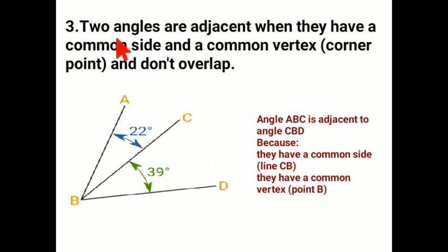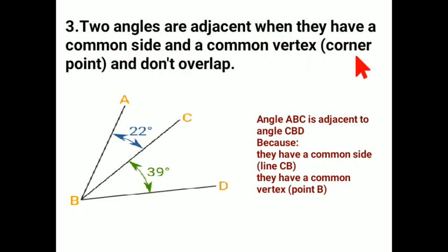Proceeding forward, we have adjacent angles — which is very, very important and we have to understand the concept clearly. In this chapter we will study about pairs of angles, not just a single angle like an acute angle, obtuse angle, or straight angle. We will study about pairs of angles and what type of angle they form together. Number three is adjacent angles: two angles are adjacent when they have a common side and a common vertex — the corner point — and they do not overlap.